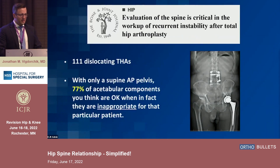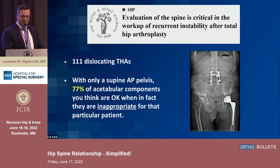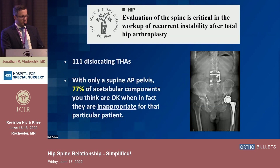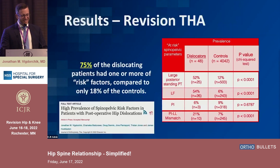If you're not getting a proper hip-spine workup, you may be missing the picture. The re-revision rate for recurrent dislocators is 15 to 20 percent — if it's that high, we're not addressing the problem. In 100 cases, 77 percent of the time, if you just got an AP pelvis x-ray, you missed the entire reason why the hip was dislocating.